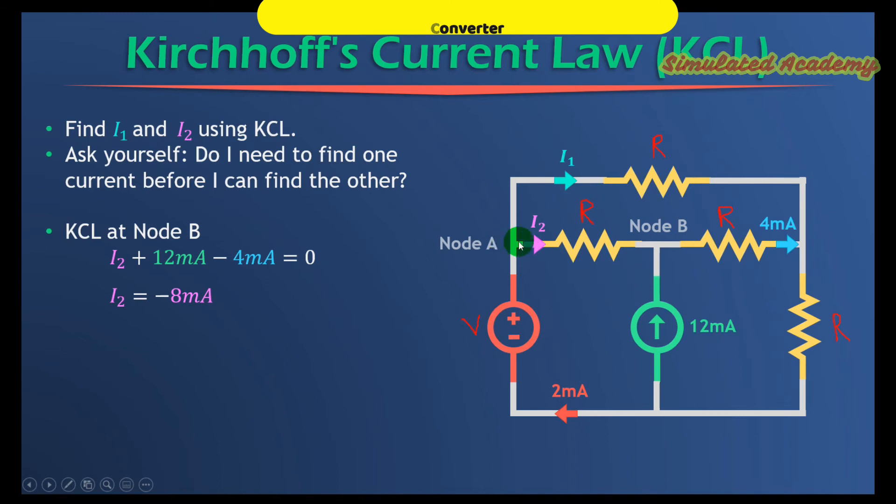Now at node A, I am also dealing with three currents. Two currents, I1 and I2, are leaving node A, and 2 mA is entering into node A. So the entering current is taken as positive while the leaving current is taken as negative, and I equate it to zero.